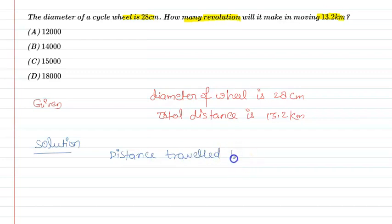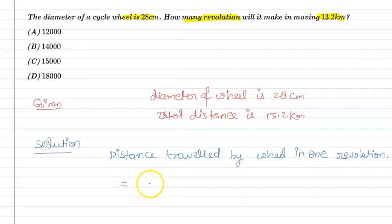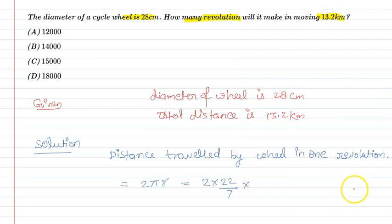Distance traveled by the wheel in one revolution — एक revolution में वो कितना travel कर रहा है, एक complete round में कितनी distance travel करता है। Let C = 2πr। यहाँ पर 2 × (22/7) use करेंगे। Diameter of wheel हमें पता है।